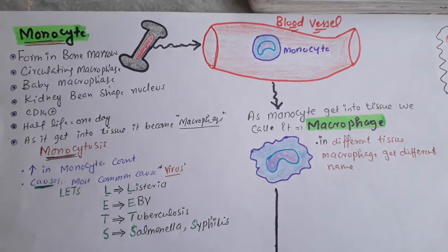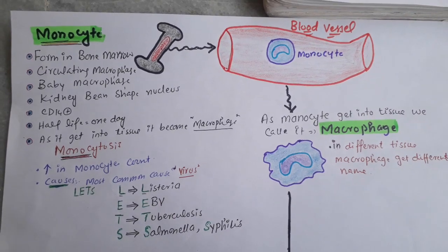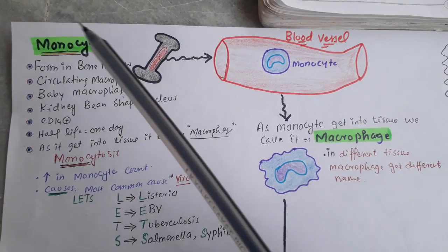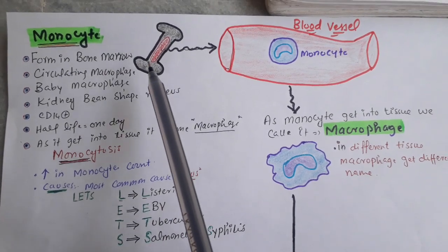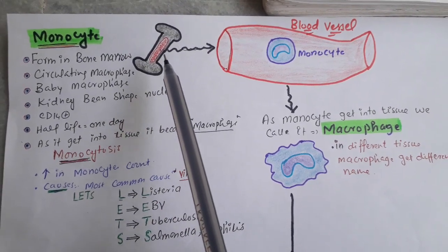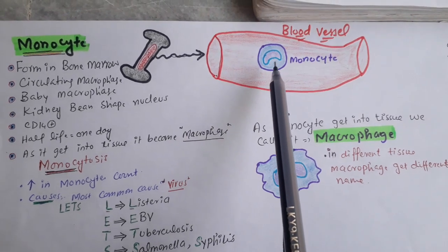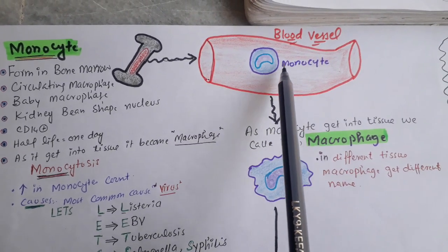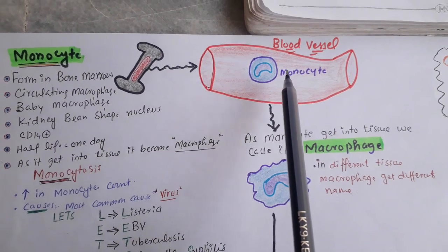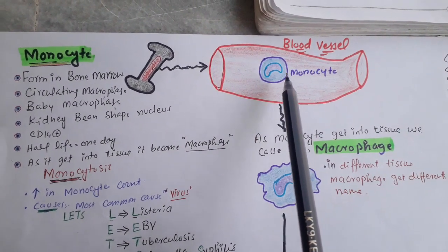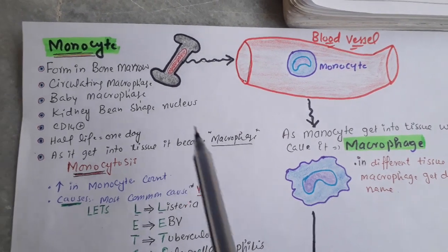Monocytes and macrophages are together, and we can also call this system the reticuloendothelial system. The monocyte is formed in the bone marrow and from there it moves towards the blood vessels. If it is in the blood, it is called a monocyte. But as this monocyte gets into the tissue, then we call it a macrophage.